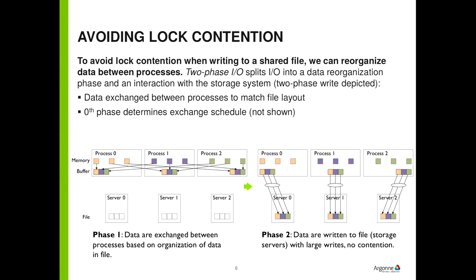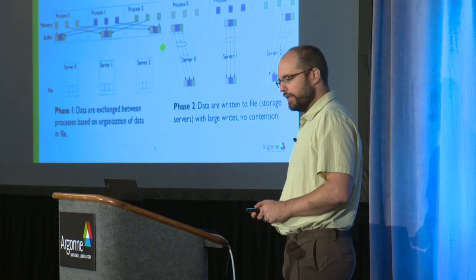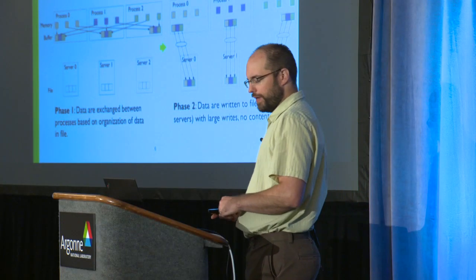We can have all processes involved, or we can pick a subset of processes to be aggregators to get even better scalability. This is the classic example of a transparent IO transformation — we're turning many non-contiguous requests into something that's going to be great for the file system.